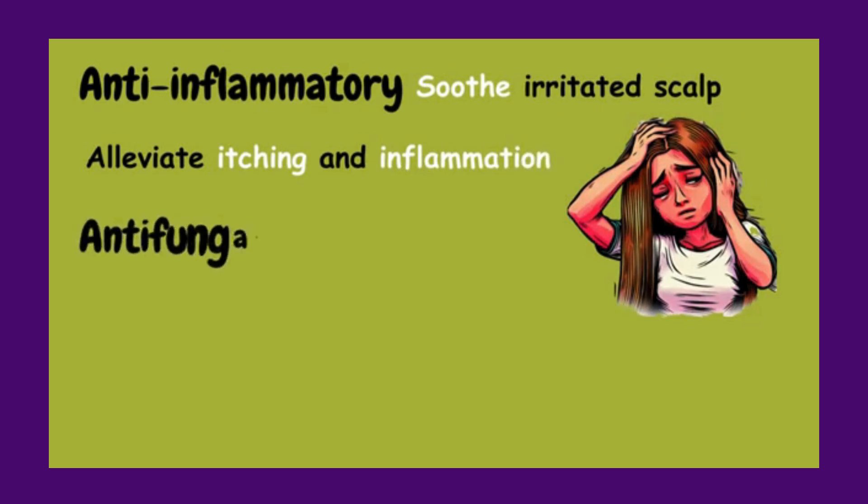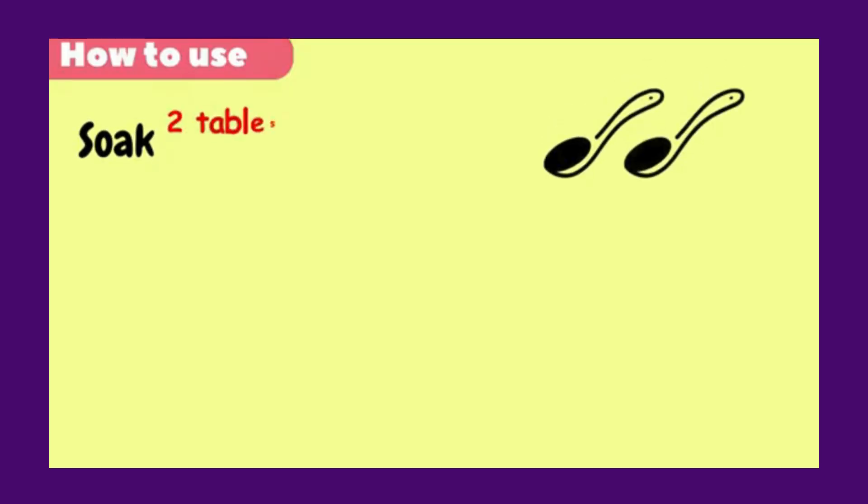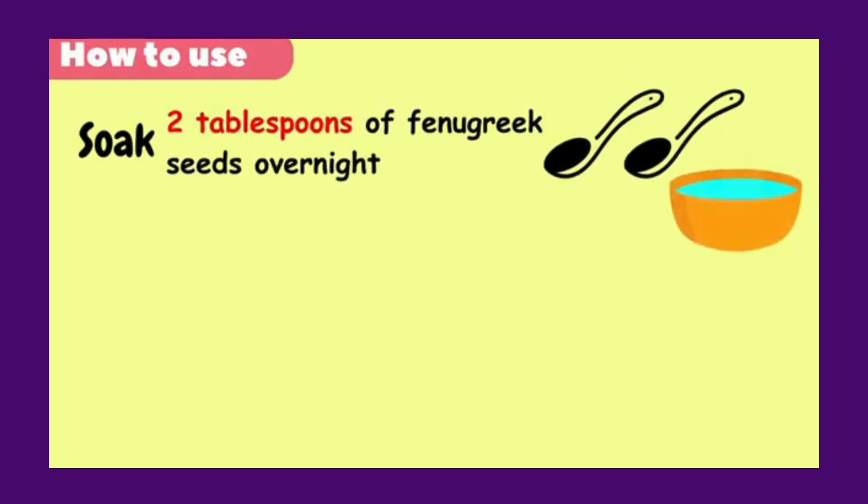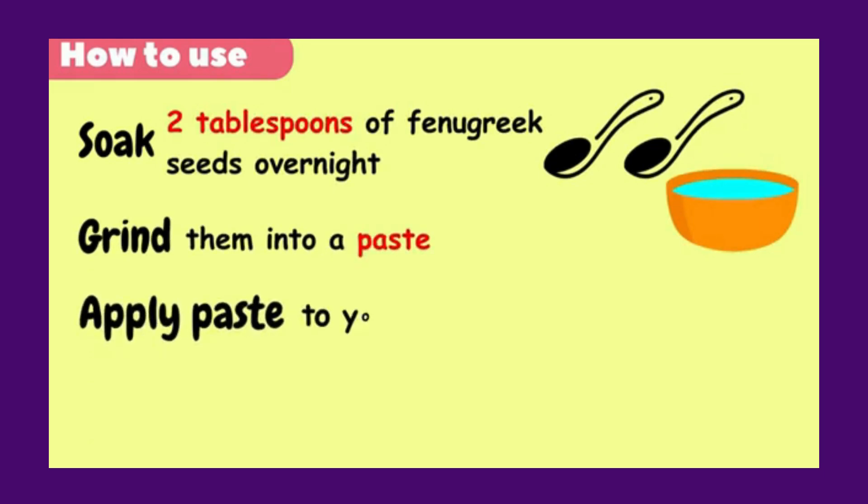Fenugreek seeds possess antifungal properties that may help control the overgrowth of fungi or yeast on the scalp, which can contribute to dandruff. To use, soak 2 tablespoons of fenugreek seeds in water overnight and grind them into a paste. Apply the paste to your scalp and leave it on for 30 minutes before rinsing it out.